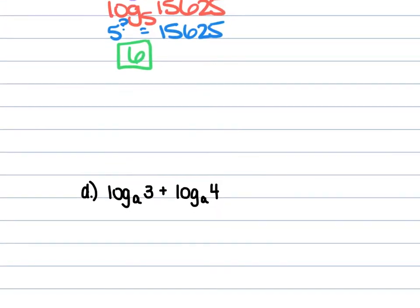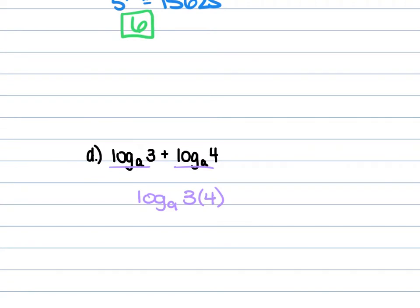For d, we have log_a of 3 plus log_a of 4. Our bases are the same, so keep the log_a and multiply 3 times 4, giving us log_a of 12. You can't do anything else with this, so that's your answer.